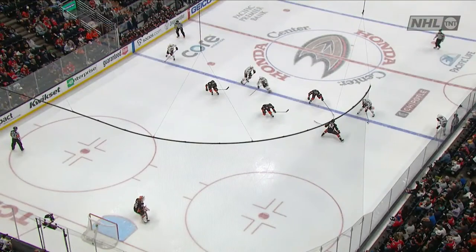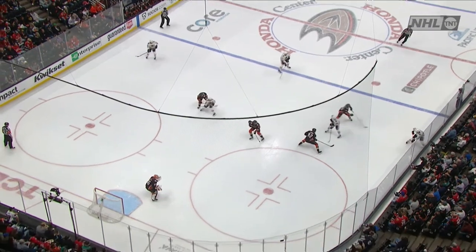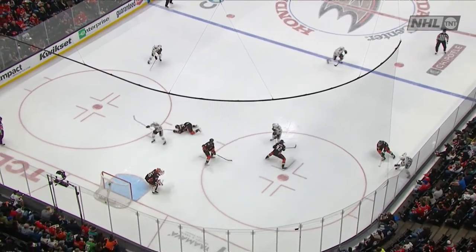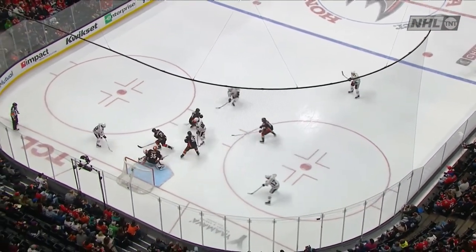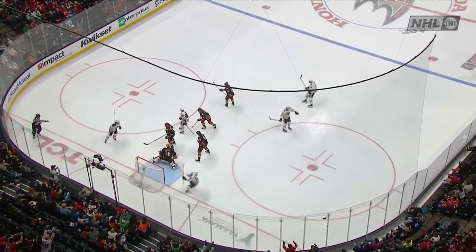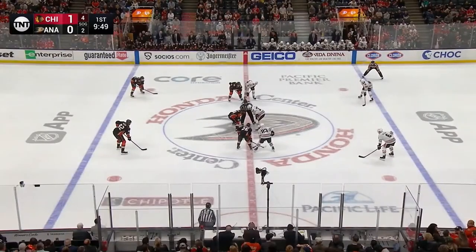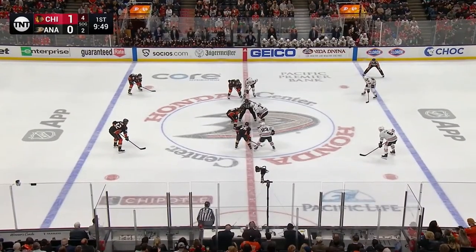Watch what ends up happening here — Lundestrom opens up the passing lane. He's gonna go with Alex Dobrynkin, he loses his edge, and now that opens up the passing lane for Radish to just go far down. What a play by Strome.